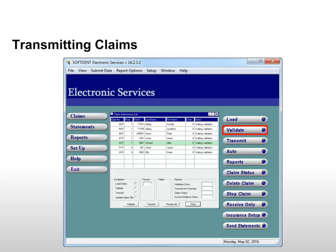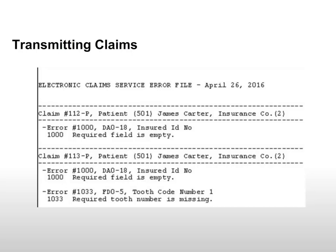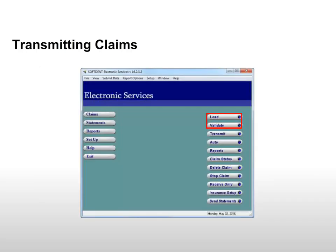The validation process checks all electronic claims for errors. Click Validate. If warning messages are displayed, read them and click OK. The Validation Report Options window is displayed. To show the validation warnings in the report, select Print Warnings in the report. To preview the report, select Print Preview. To print the report, select Print. Click OK. The Validation Error Report explains the data that is missing or incorrect on each claim. Claims can be resubmitted after the information is corrected in Softdent. If a corrected claim still displays an error, click Load and then Validate to revalidate the claim.